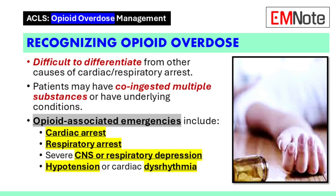Recognizing opioid overdose: It can be difficult to differentiate opioid-associated emergencies from other causes of cardiac and respiratory arrest, particularly in out-of-hospital settings. Patients may have co-ingested multiple substances or have underlying medical and mental health conditions. Opioid-associated emergencies include cardiac arrest, respiratory arrest, or severe life-threatening instability, such as severe central nervous system or respiratory depression.